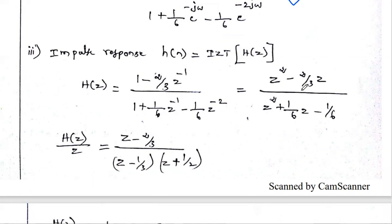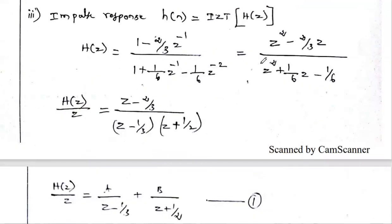While calculating the inverse Z-transform, we have to convert to positive z powers. So multiply both numerator and denominator of H(z) by z². The numerator becomes z² − (2/3)z, and the denominator becomes z² + (1/6)z − (1/6). Now we have to factorize this denominator polynomial.